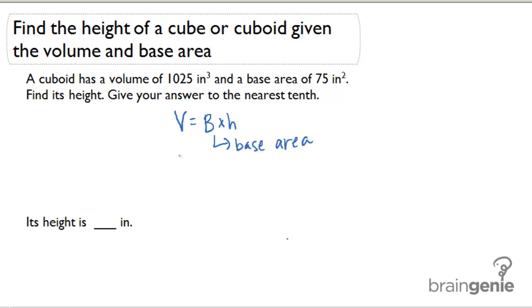Let's read the problem. It says a cuboid has a volume of 1025 cubic inches and a base area of 75 square inches. Find its height. Give your answer to the nearest tenth.